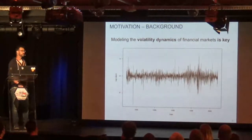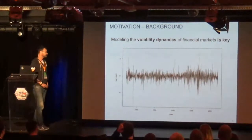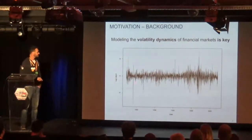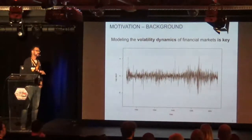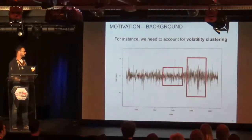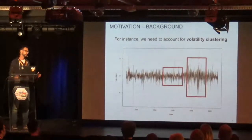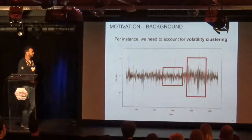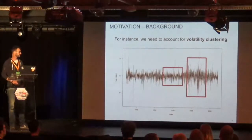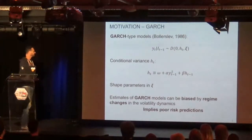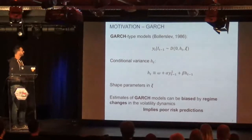More seriously, let's start with a picture. This is the Swiss market index for a time period in log returns, and what we try to capture in risk management is the change in volatility — how these time series wiggle over time. More precisely, we try to capture what's called volatility clustering. The seminal model for that is the GARCH model — the Generalized Autoregressive Conditional Heteroskedastic model by Bollerslev, 1986.